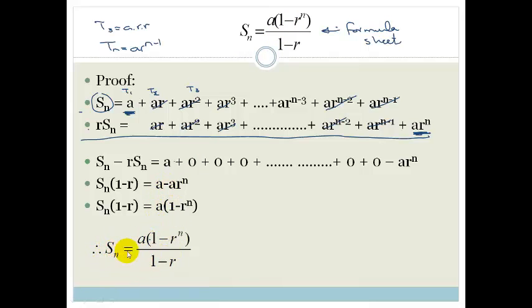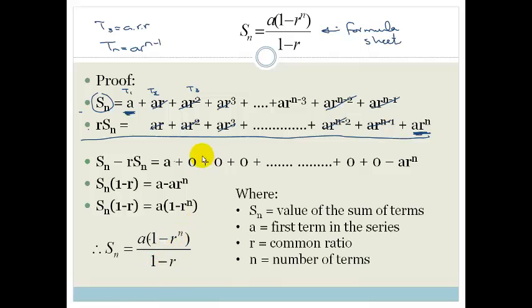The sum is Sn equals a times (1 minus r to the power of n) all over (1 minus r), where a is the first term of the series, r is the common ratio, and n is the number of terms. Now let's do a couple of examples.